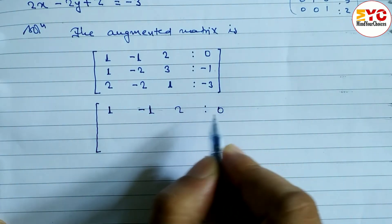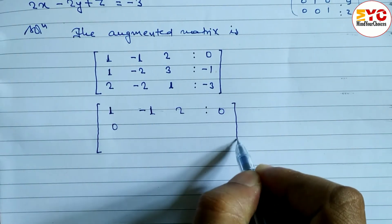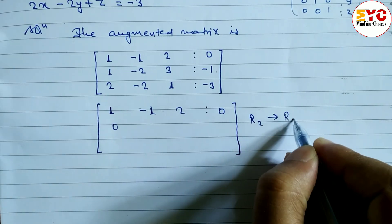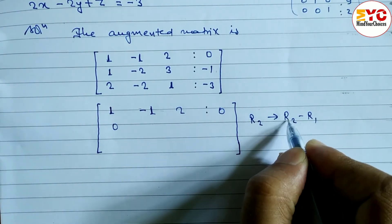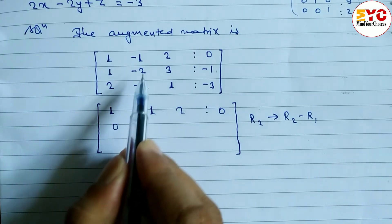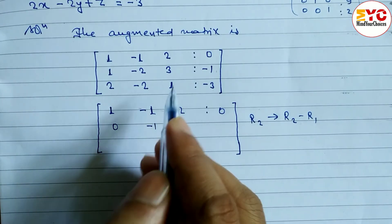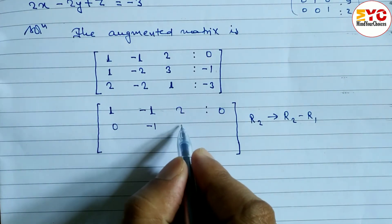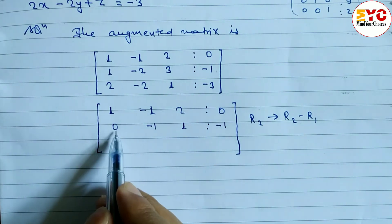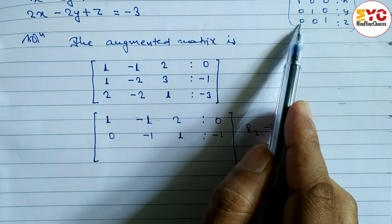We write the first row unchanged: 1, -1, 2, 0. We apply R2 → R2 - R1. Subtracting: 1-1=0, -2-(-1)=-1, 3-2=1, and -1-0=-1. So the new second row is 0, -1, 1, -1. We now have zeros in the first column for rows 2 and 3.